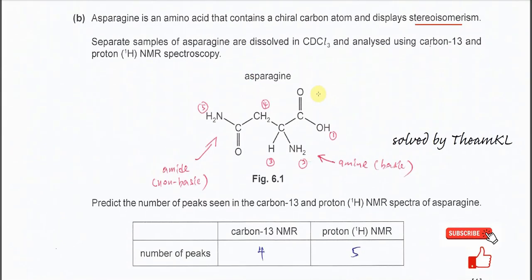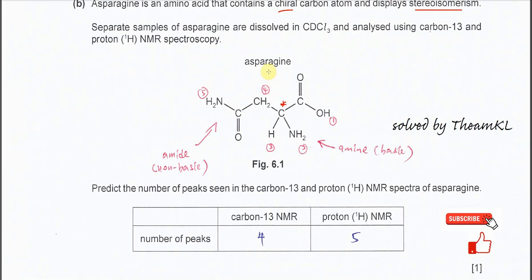Part B. Asparagine is an amino acid that contains a chiral carbon and displays stereoisomerism, so it's optical isomers. Separate samples of asparagine are dissolved in CDCl3 and analyzed using carbon-13 and proton NMR. We need to identify how many types of protons present in this molecule.